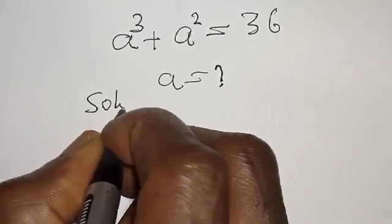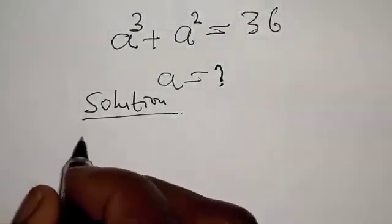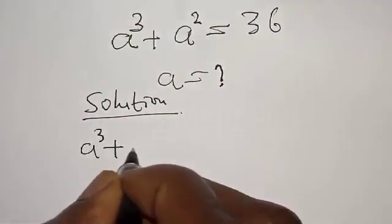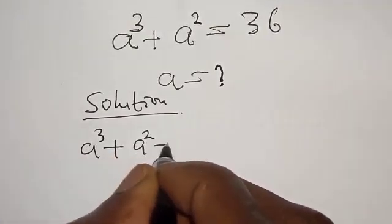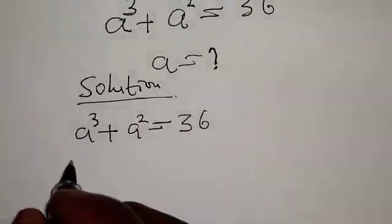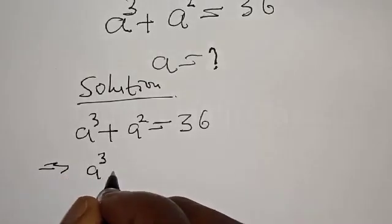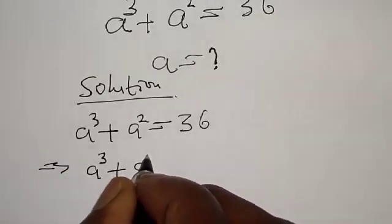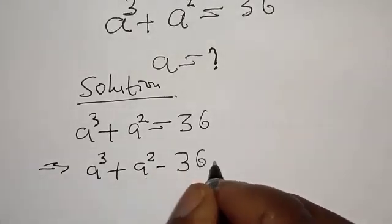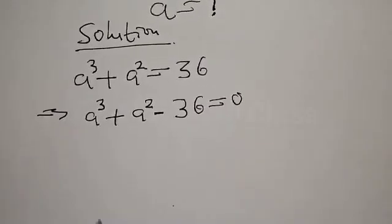Solution. We have A raised to power 3 plus A square is equal to 36. This implies that we have A raised to power 3 plus A square minus 36 equal to 0. Now, let's find one of the roots first.